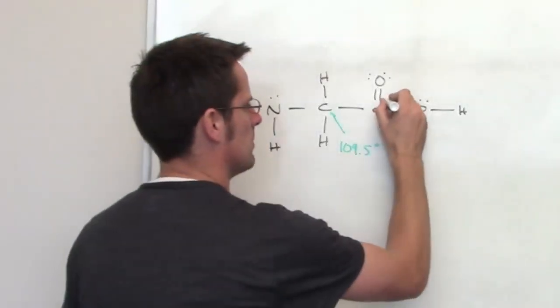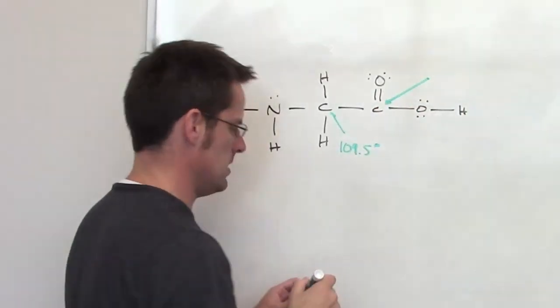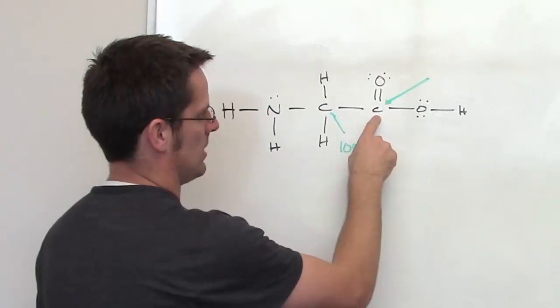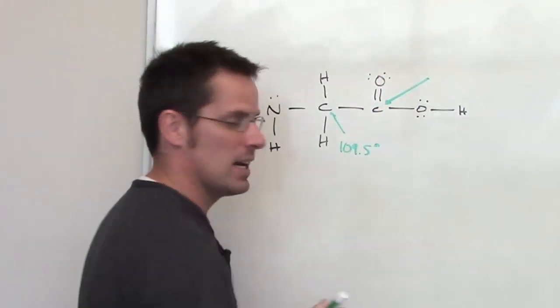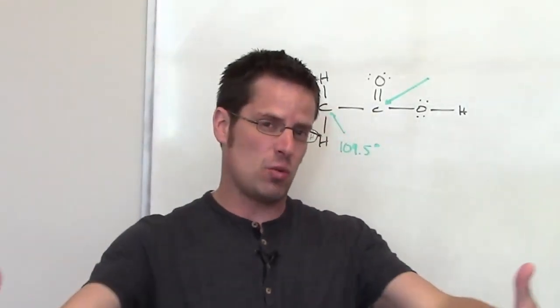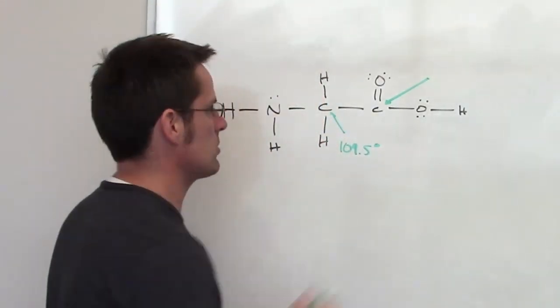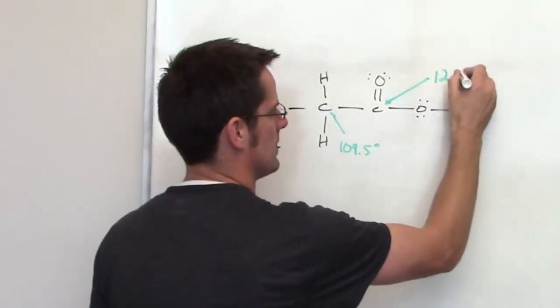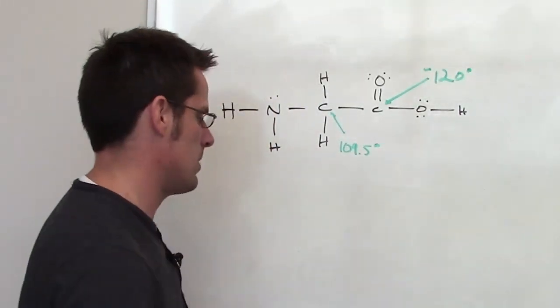Now what about this carbon? Well that carbon has three things around it. It's got an oxygen up top, a carbon to the left, and an oxygen to the right. What is the furthest angle apart you could get three things around a central atom? The answer is going to be about 120 degrees around that central carbon atom.